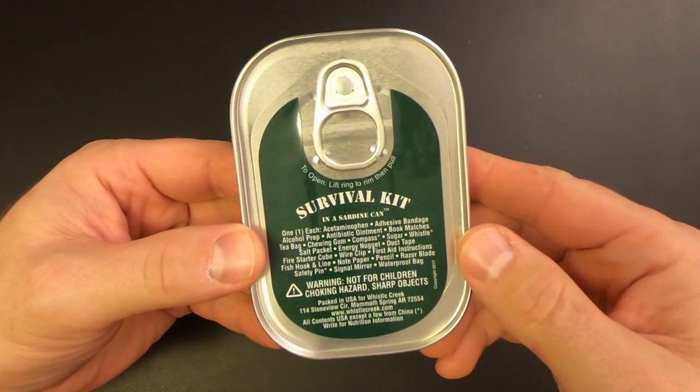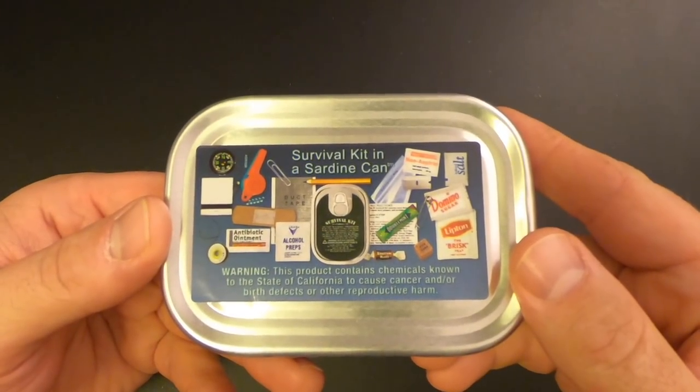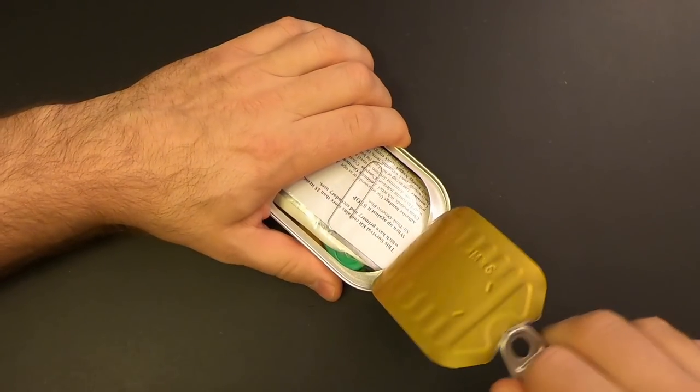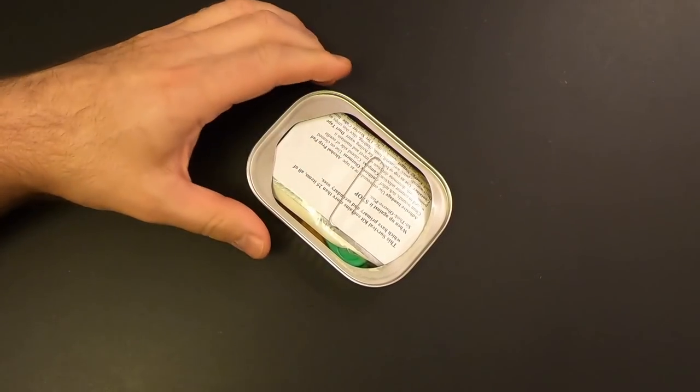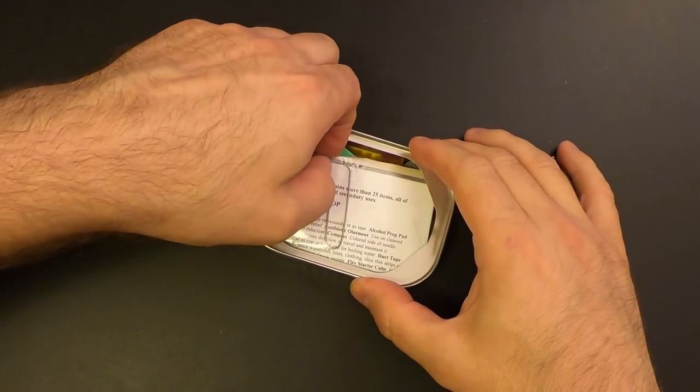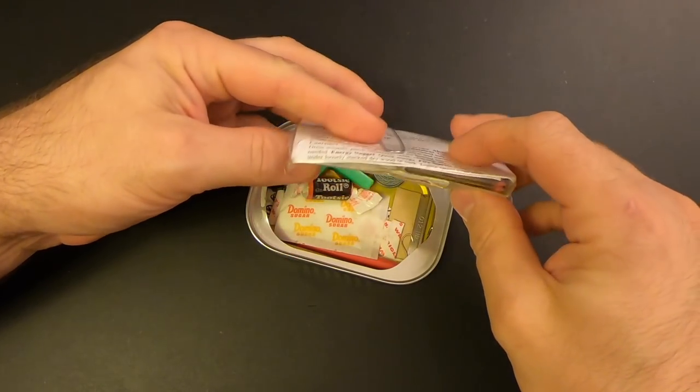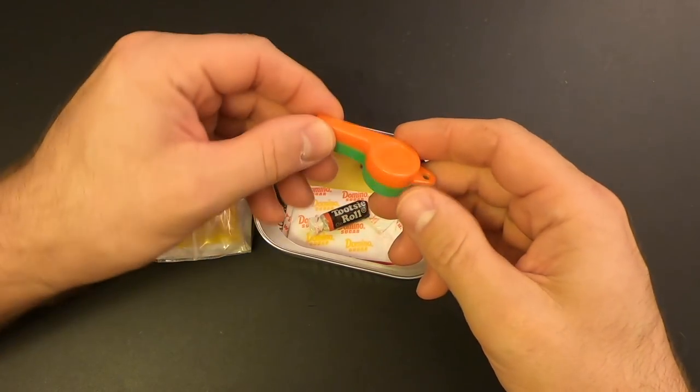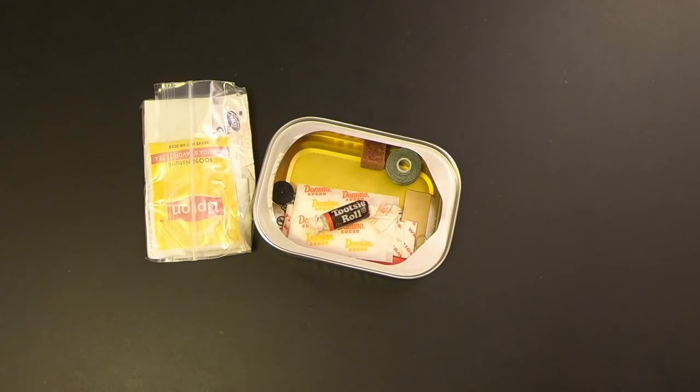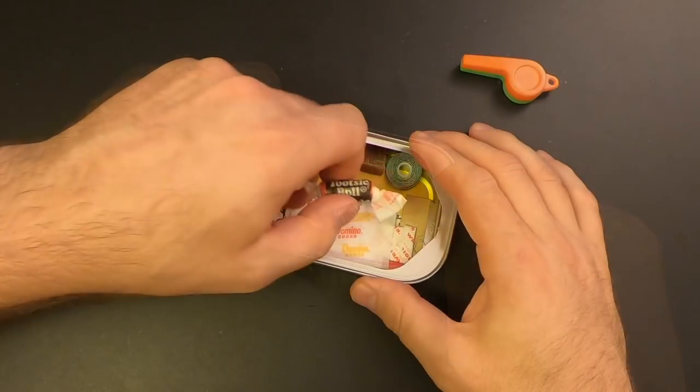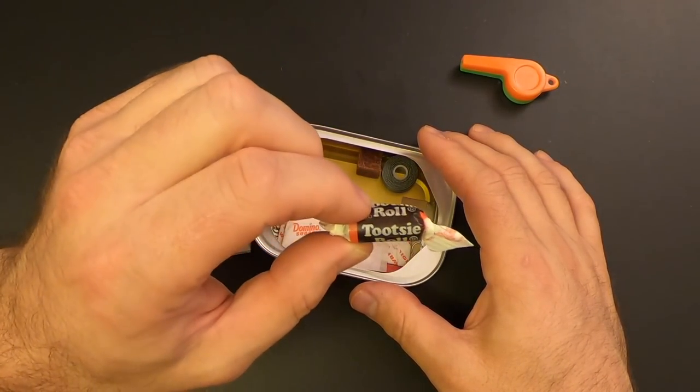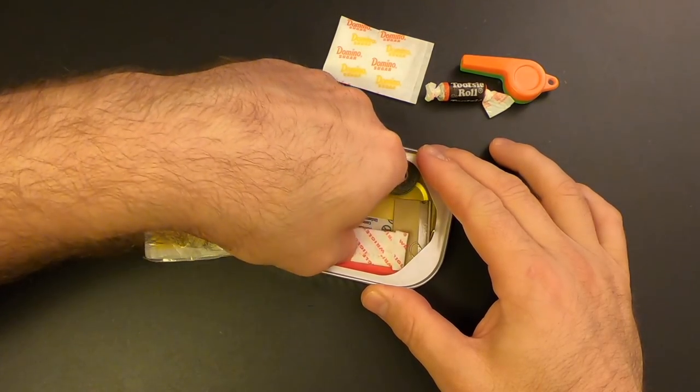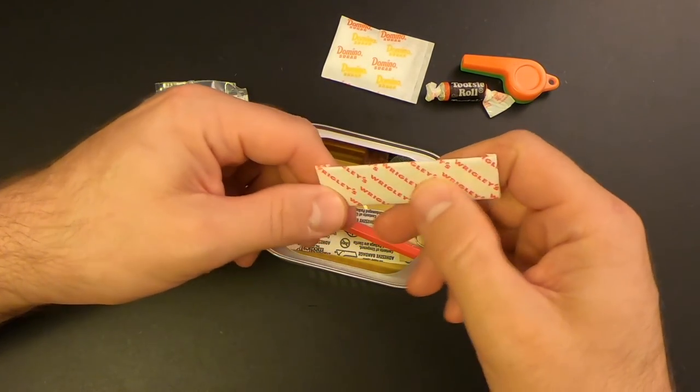There it is. You can pause that and read it if you want. And there's the back. Okay. So we've got this bundle of stuff, and we'll open that up in a minute. We've got a whistle. Multicolored whistle. Sounds good. Sounds fine. Then we've got a Tootsie Roll for some quick sugar and a little morale boost.